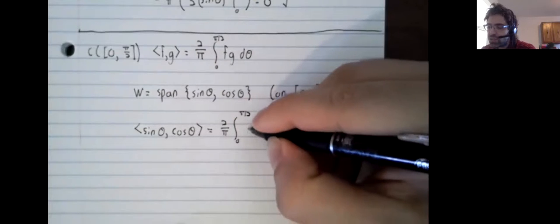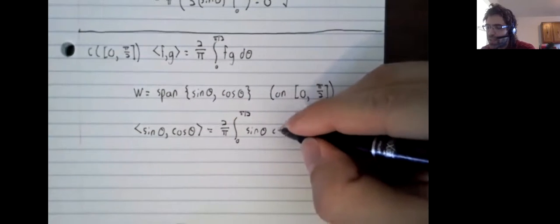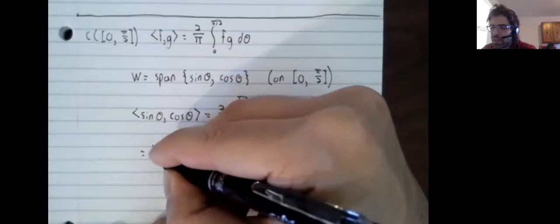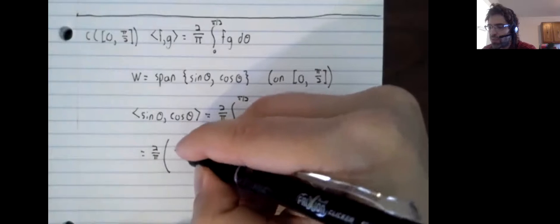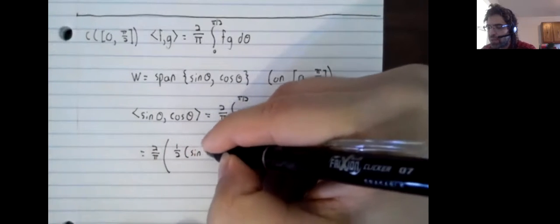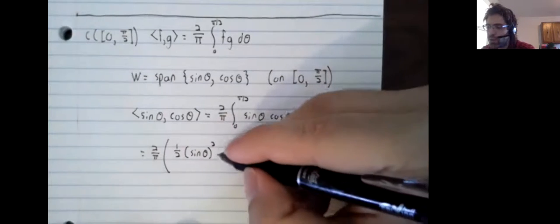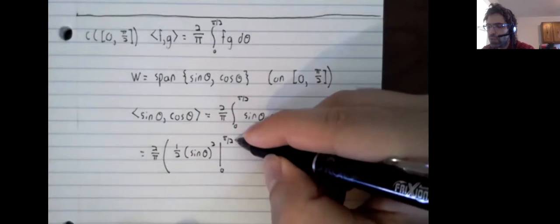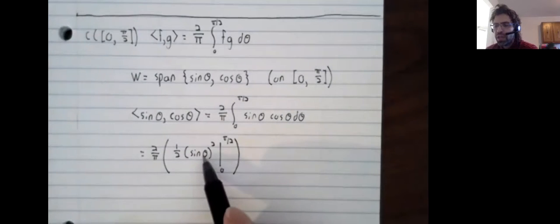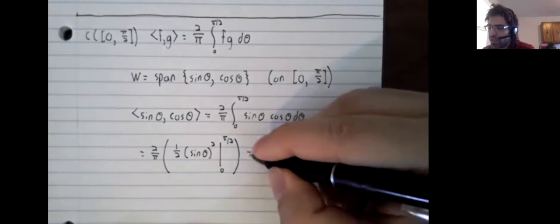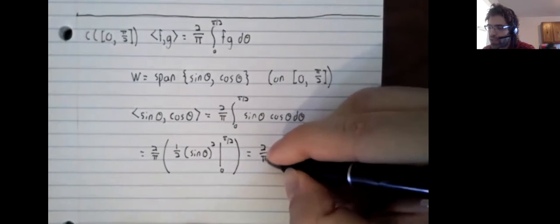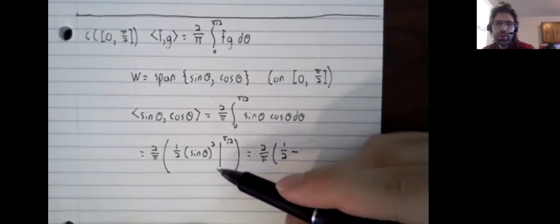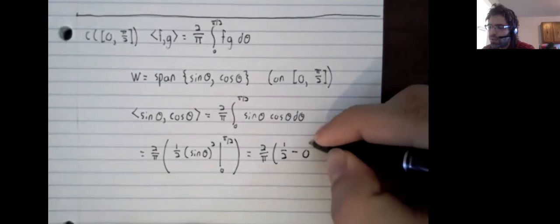And it isn't, spoiling the punchline a little. But two divided by pi, the anti-derivative is still one half times sine squared. Now we're evaluating from zero to pi divided by two. The sine of pi divided by two is one. One squared is one times one half. We plug zero in, we do still get zero.